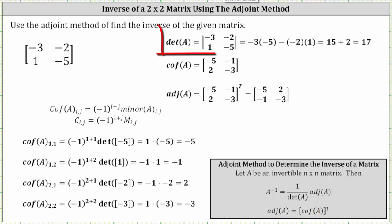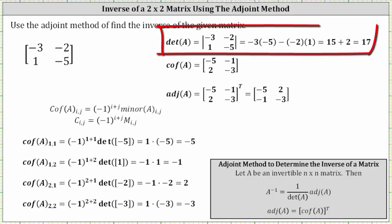Let's first find the determinant, which is shown in the upper right-hand corner. The determinant of the 2 by 2 matrix is equal to negative 3 times negative 5, minus negative 2 times 1. Simplifying, we have positive 15 plus 2, which is equal to 17.